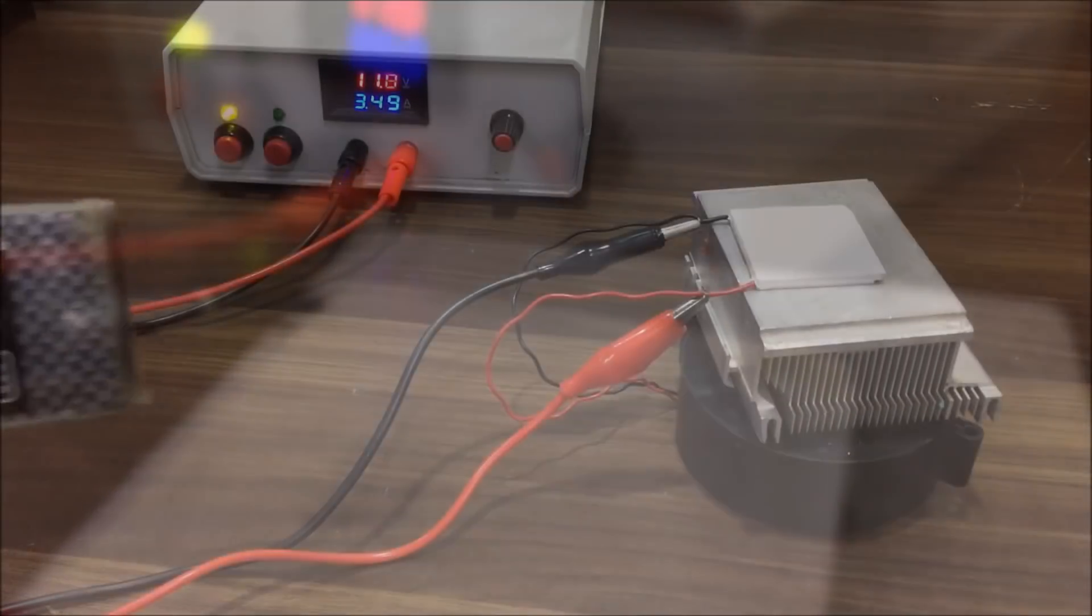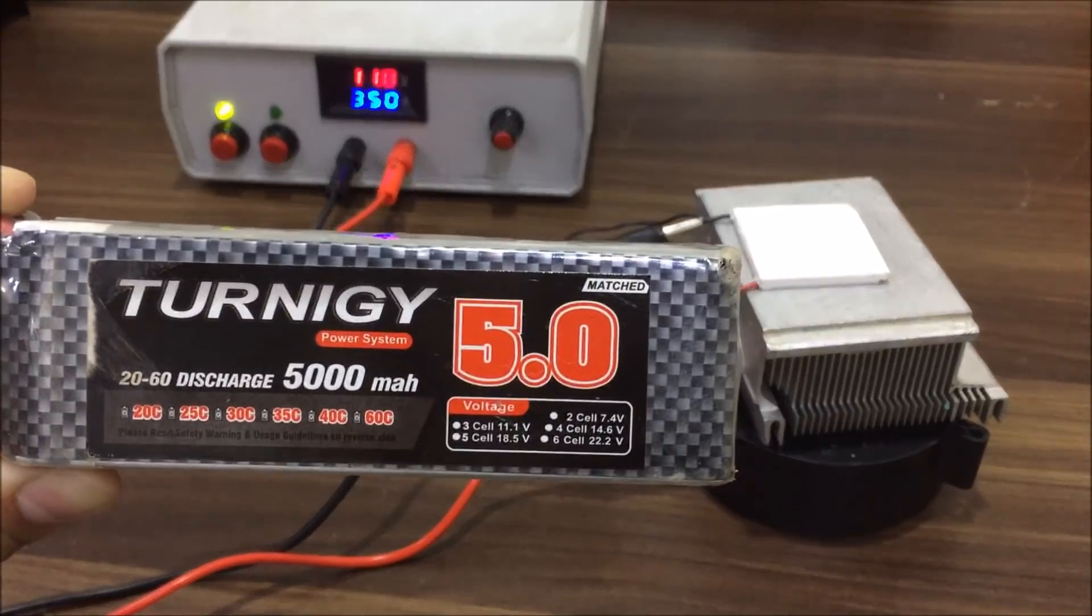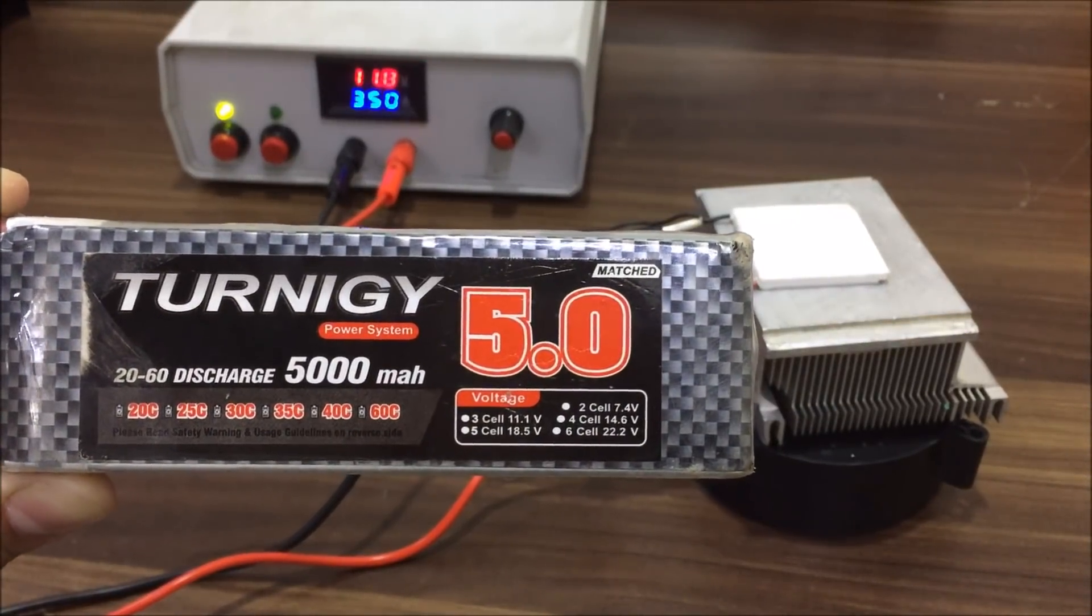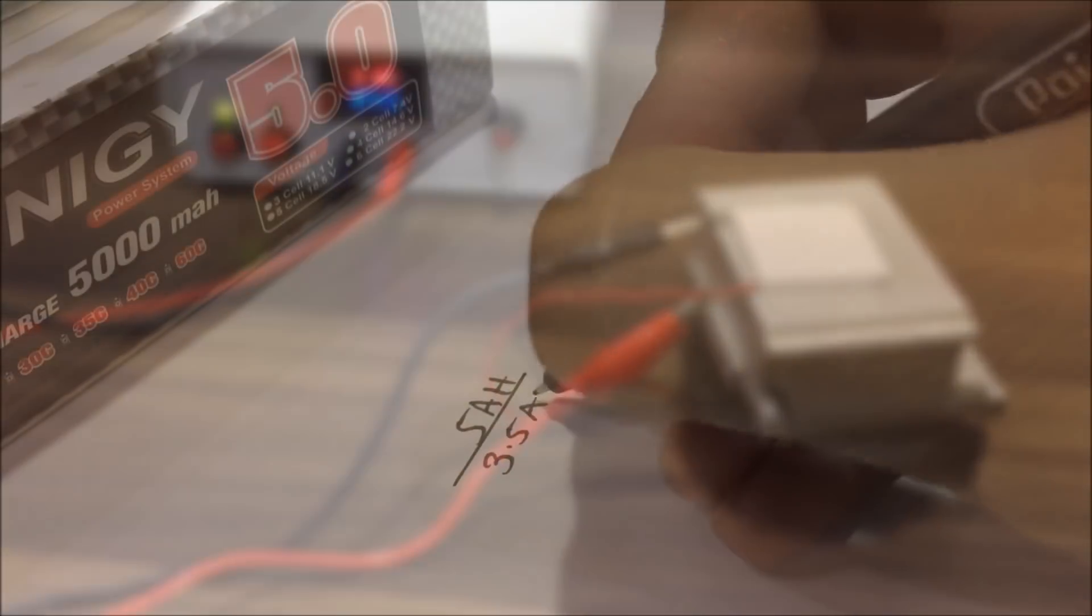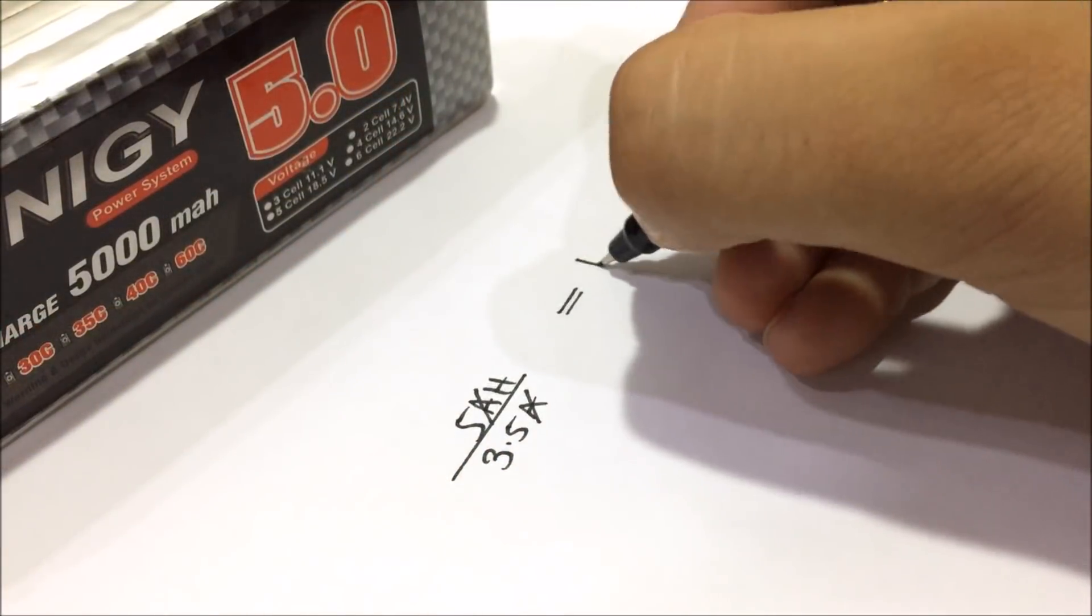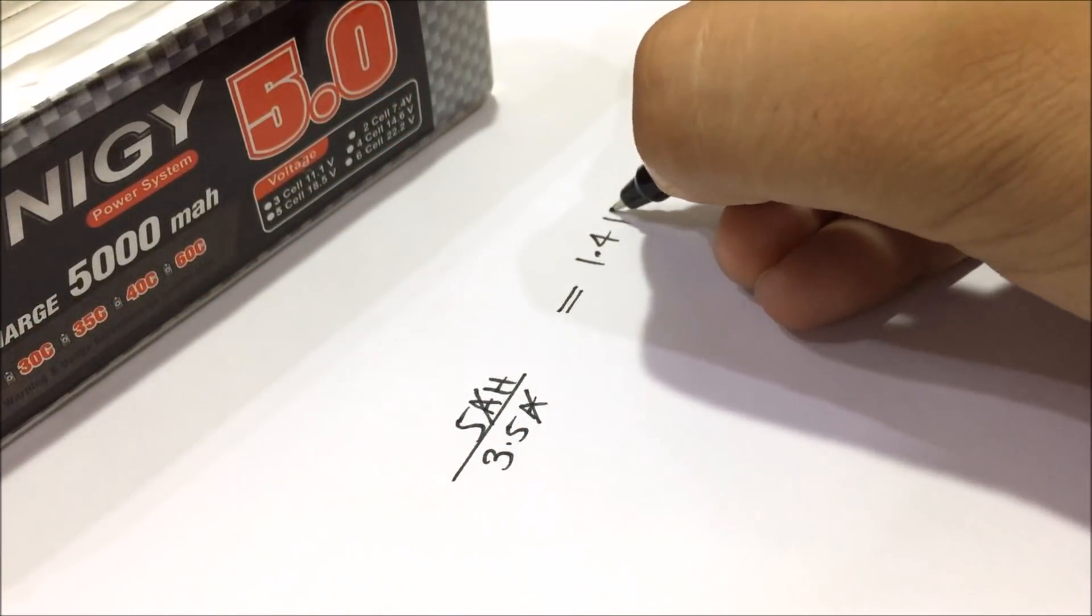So, if you want to run this whole setup on a 3S 5Ah battery, then with the current consumption of 3.5Ah, you will get a battery run time of roughly about 1.4 hours.